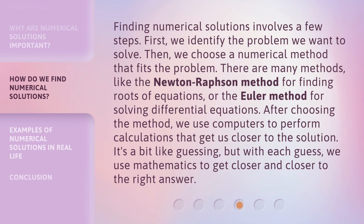Finding numerical solutions involves a few steps. First, we identify the problem we want to solve. Then, we choose a numerical method that fits the problem. There are many methods, like the Newton-Raphson method for finding roots of equations, or the Euler method for solving differential equations. After choosing the method, we use computers to perform calculations that get us closer to the solution. It's a bit like guessing, but with each guess, we use mathematics to get closer and closer to the right answer.